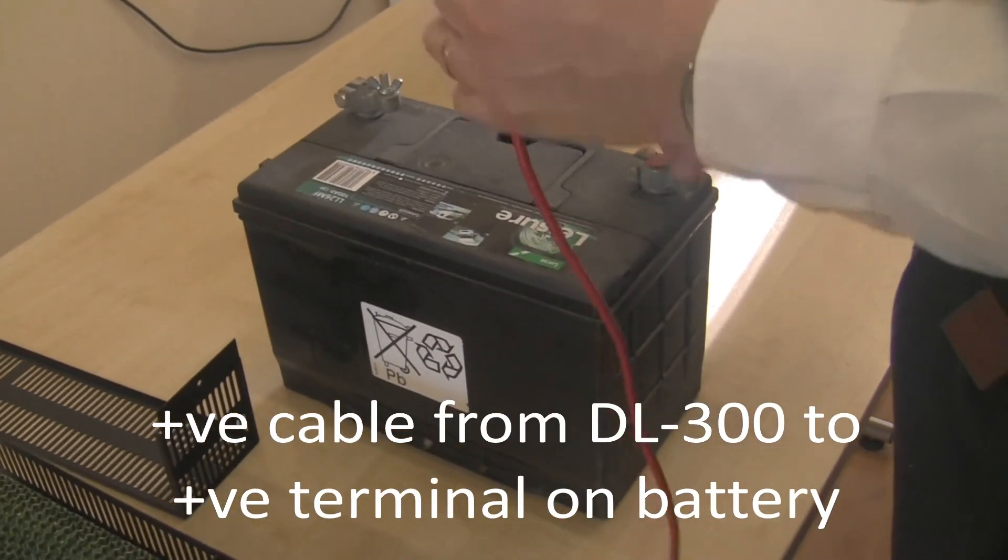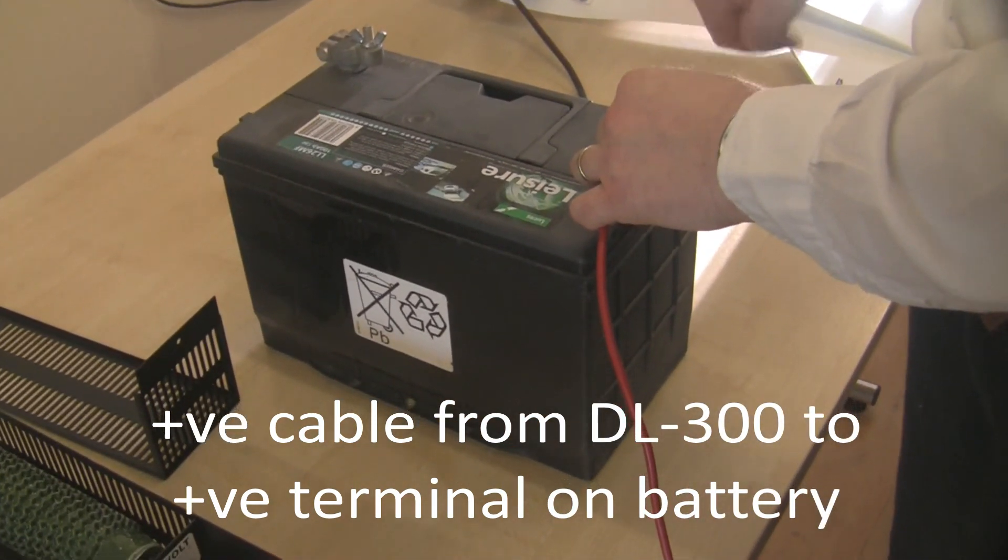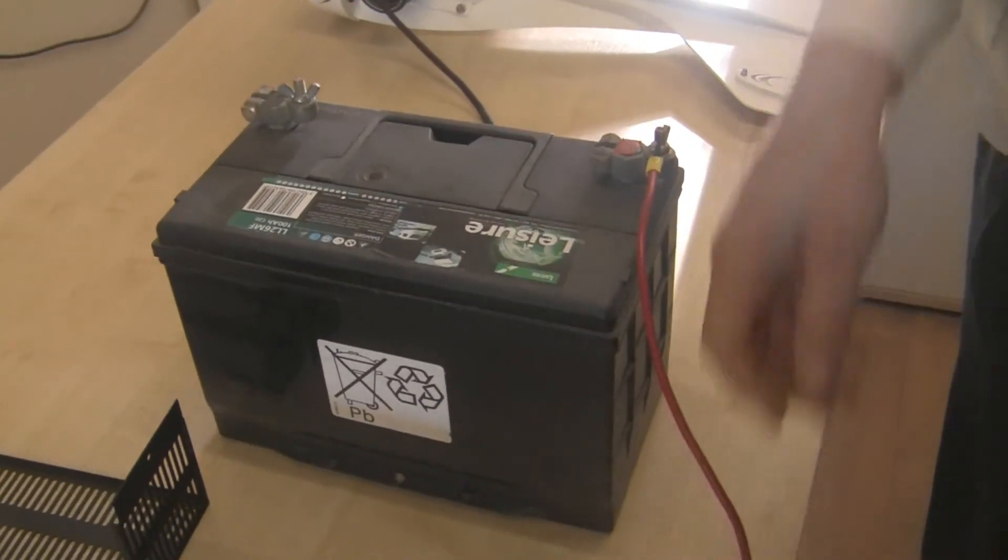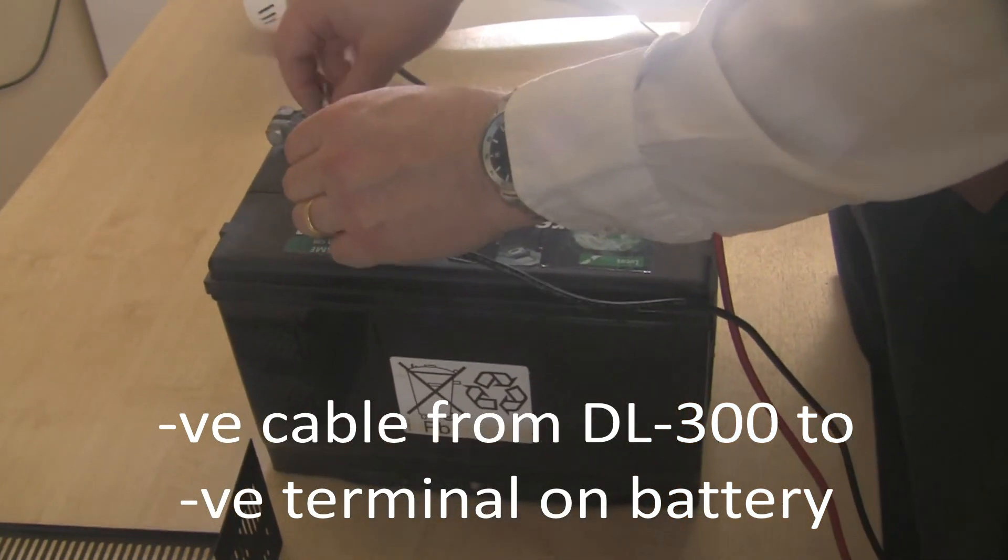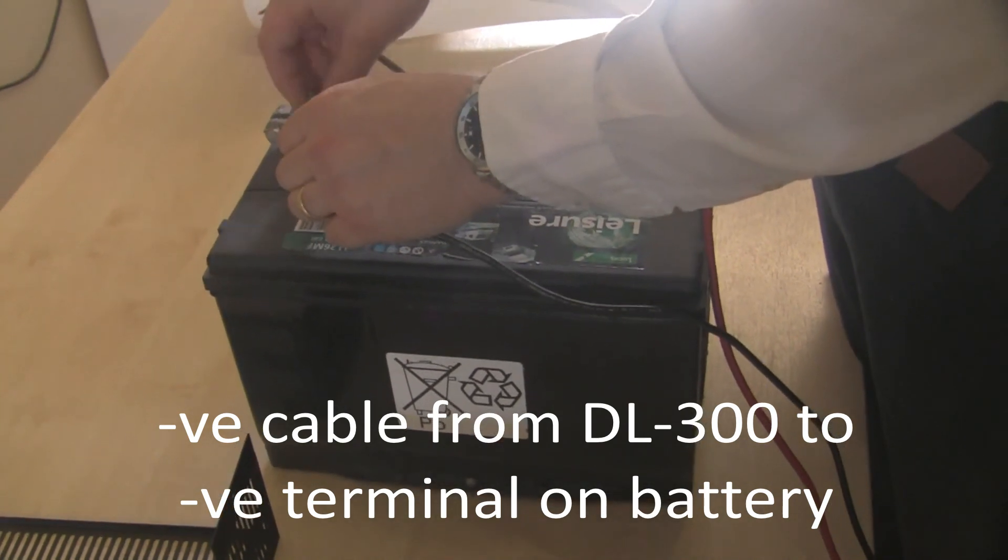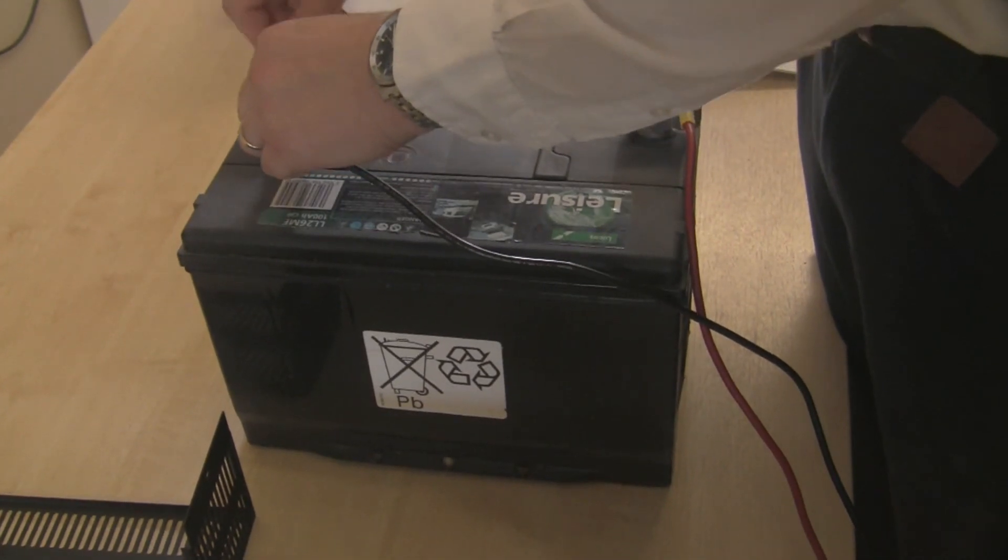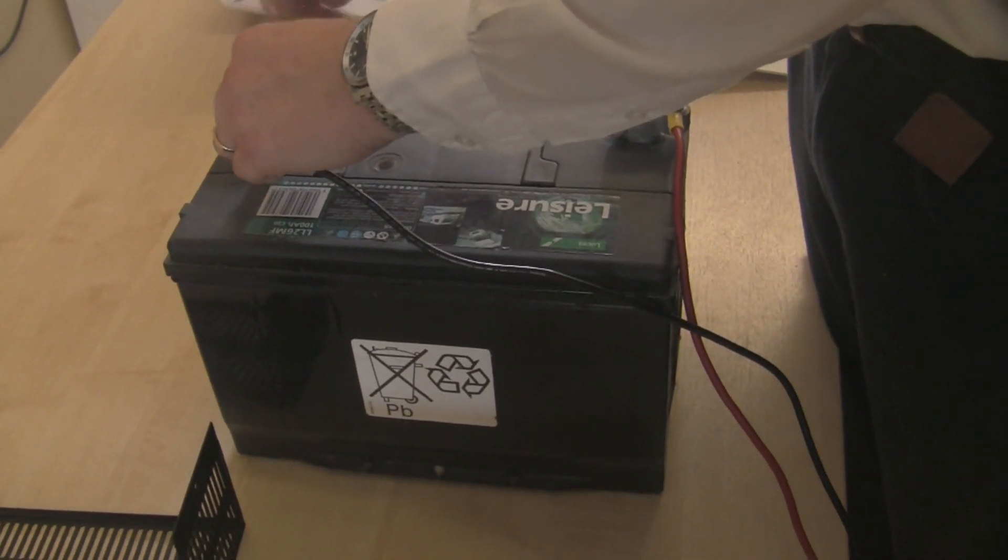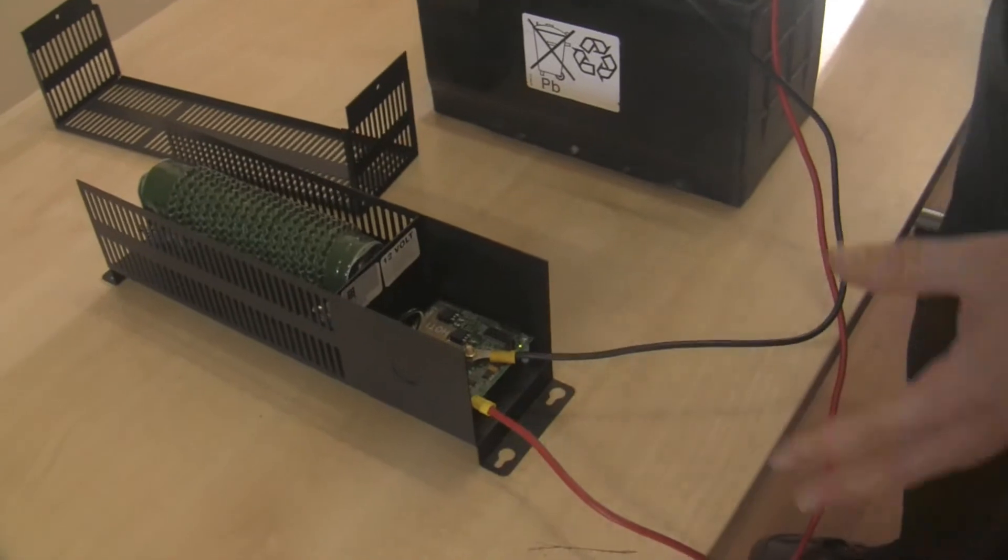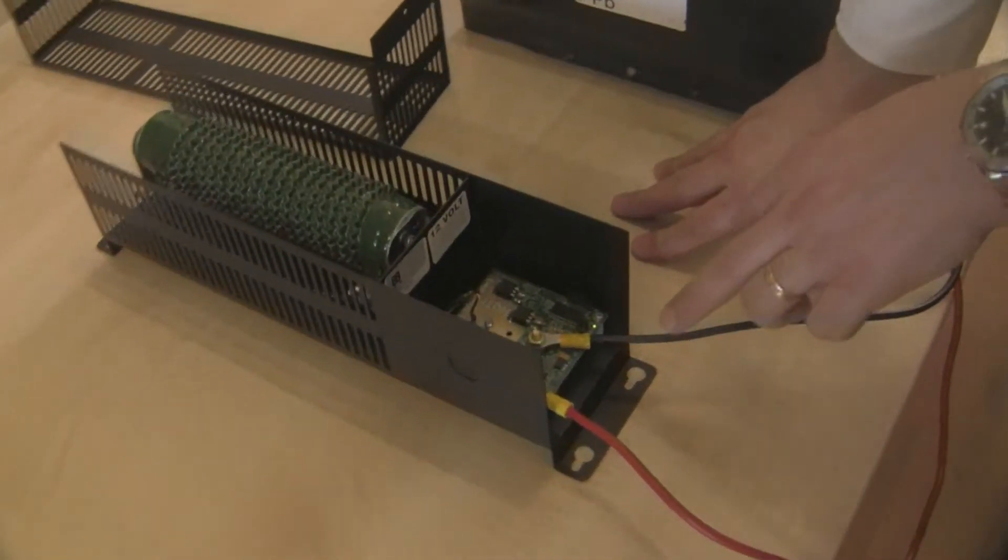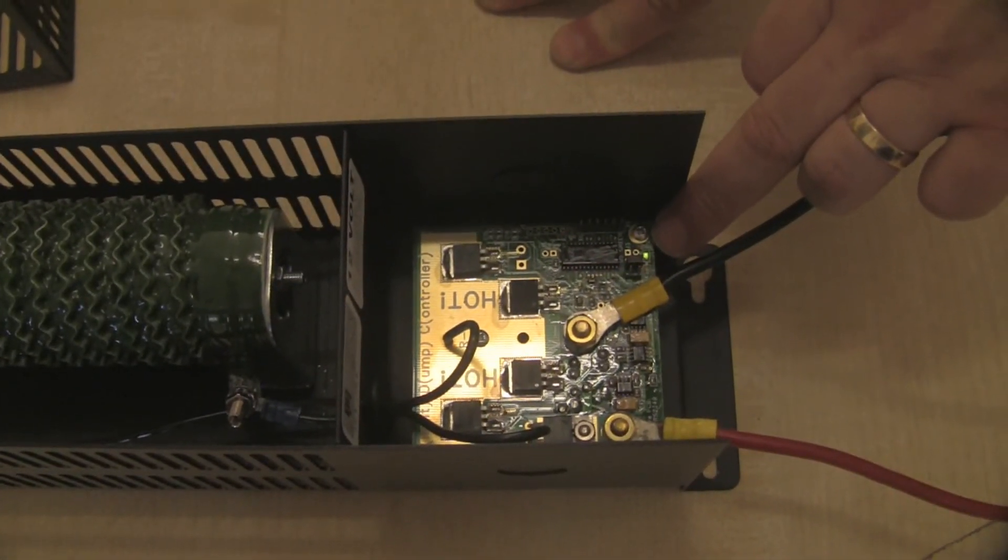So I'm connecting the positive cable from the positive terminal of the DL300 to the positive terminal of the battery, and I'm going to do the same thing with the negative terminal. When you're using batteries, obviously be very careful using tools around battery terminals. You don't want to short them out, otherwise there will be a big spark and the tool that's actually causing the short circuit will probably melt and possibly do you harm. So now I've connected that up, it's actually powered up the controller and you can possibly see there's a green LED, a very tiny green LED right at the tip of my finger, it's just lit up.